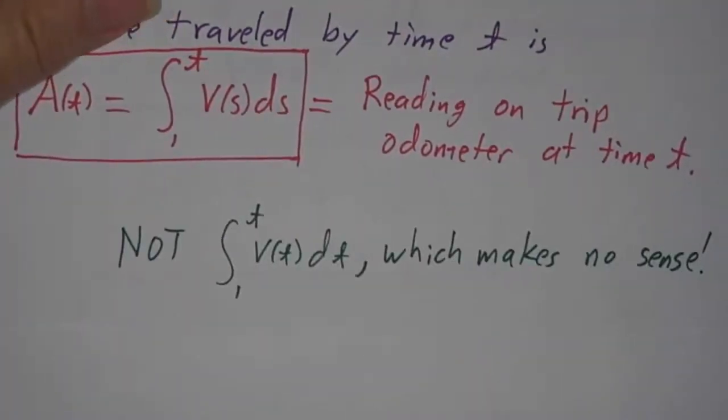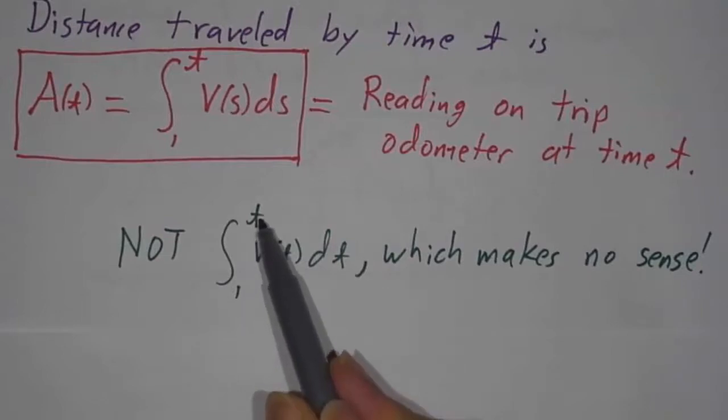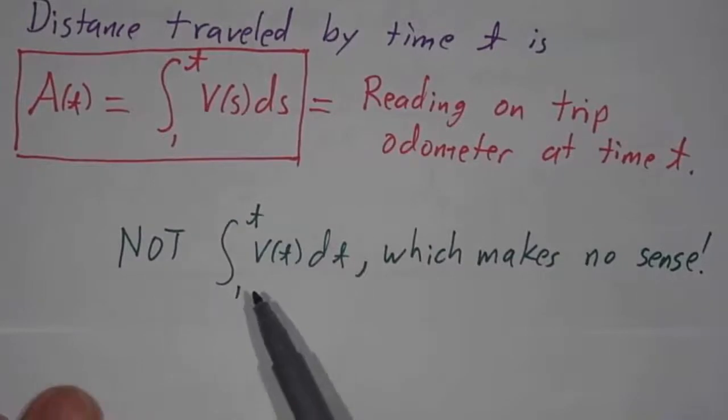A lot of people write v(t)dt from 1 to t, and that doesn't make any sense. Because if t is 7, then t can't be all the values between 1 and 7, it's just 7. Saying t takes on all the values between 1 and t doesn't make any sense at all.